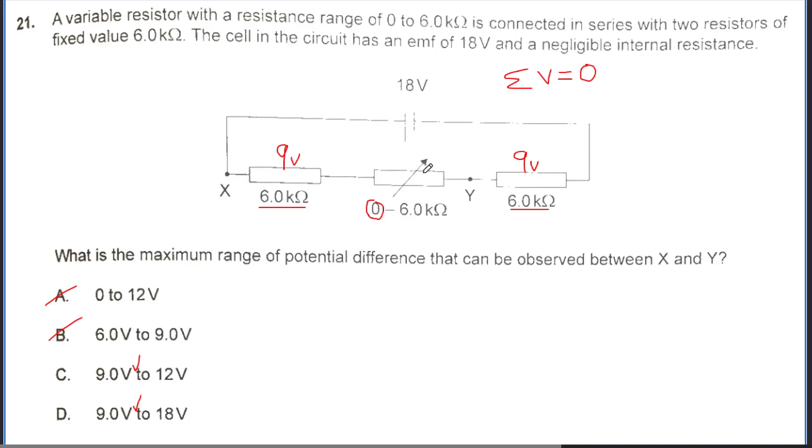Now we need to consider the maximum case of 6 kiloohm resistance in this variable resistor. Now instead of two of the same resistances, we have three of the same resistances. So instead of 9 volts, it's going to be 18 volts over 3 because the voltage difference is equally distributed. So we have 18 over 3, which is 6 volts. So each resistor dissipates 6 volts.